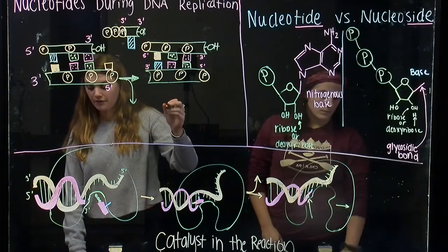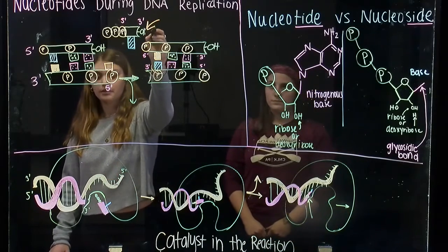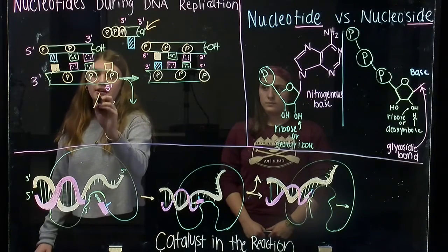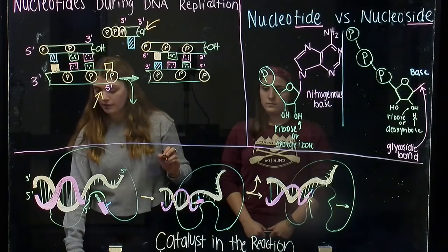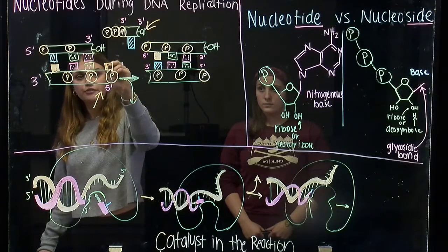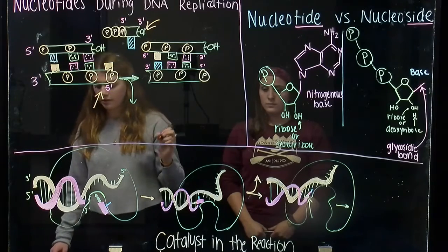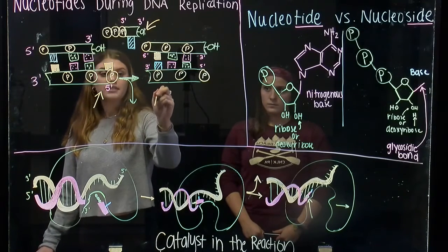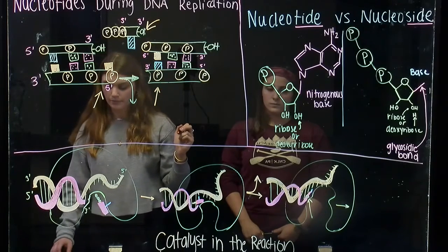An incoming nucleoside triphosphate forms a base pair with a partner on the template strand, which is down here on the bottom. The nucleoside triphosphate is covalently attached to the partner-free 3' hydroxyl on the growing DNA strand, which forms a new DNA strand synthesized in the 5' to 3' direction.